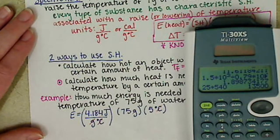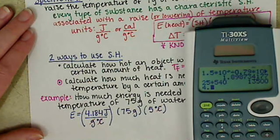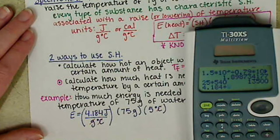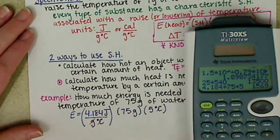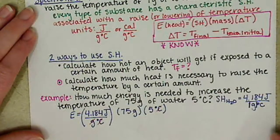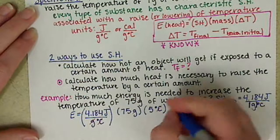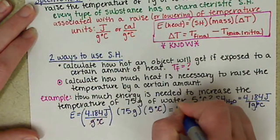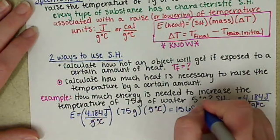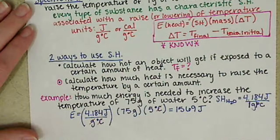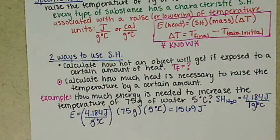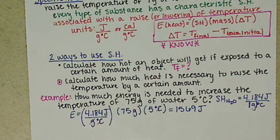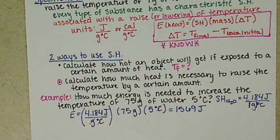So let's take our calculator. We have 4.184 times 75 times 5 and I get 1569. So it's going to take 1,569 joules of energy to increase 75 grams of water by 5 degrees Celsius.